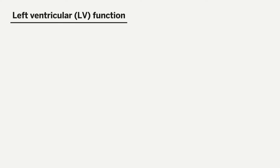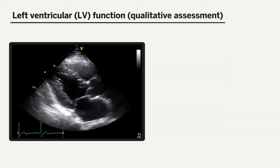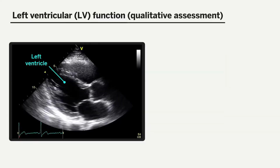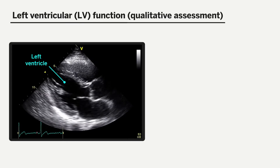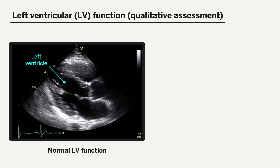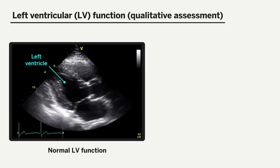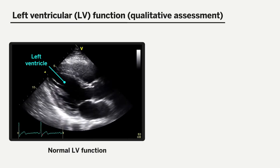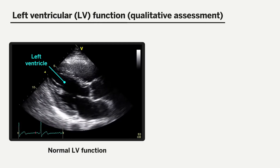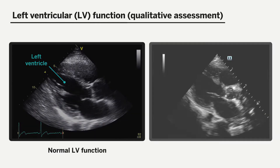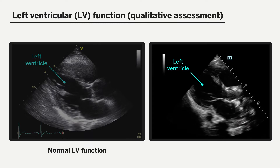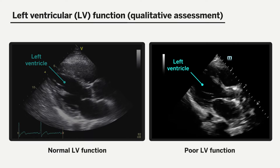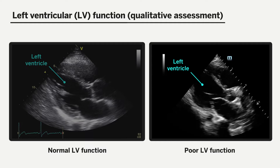Left ventricular assessment can be performed in this view both qualitatively and quantitatively. Qualitatively, left ventricular function can be eyeballed, where good left ventricular contractility can be seen visually, suggesting good function as displayed in the video loop on the left. Poor contractility can also be appreciated, indicating poor left ventricular function, as displayed in the video loop on the right.